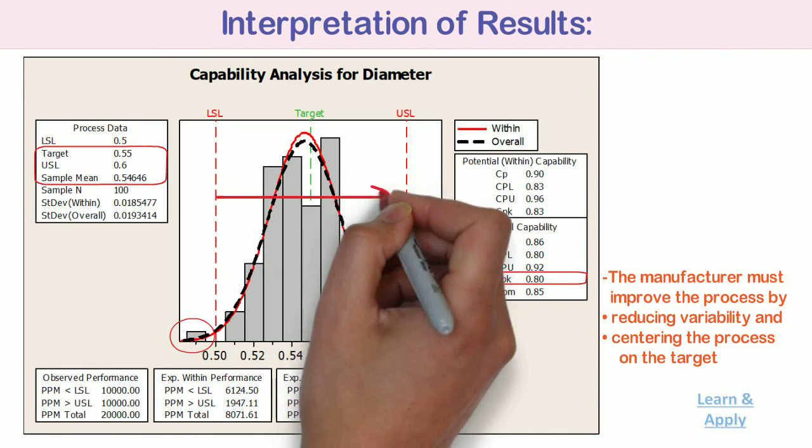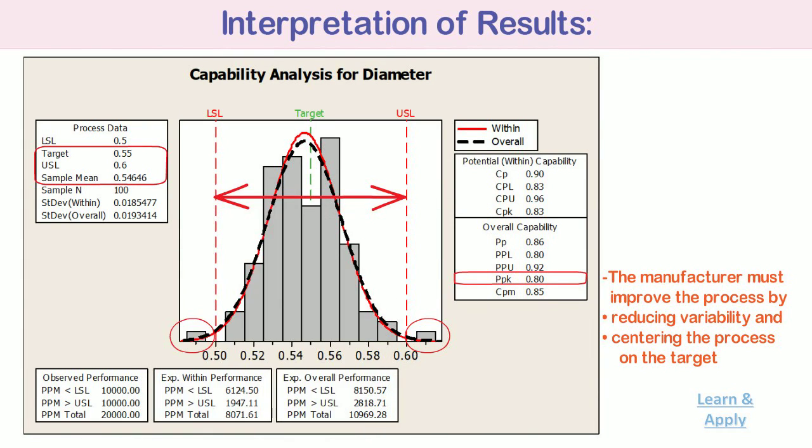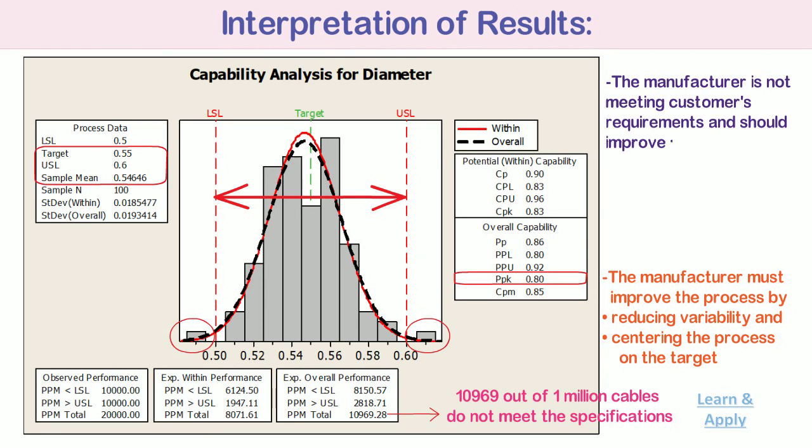Apparently, the large variation in the process is a much more severe problem for this production line compared to the process not being centered on target. Likewise, the PPM total, i.e., expected overall performance, is the number of parts per million, 10969.28, whose characteristics of interest is out of the tolerance limits. This means that approximately 10,969 out of 1 million cables do not meet the specifications. The manufacturer is not meeting customer requirements and should improve its process by reducing the process variation.